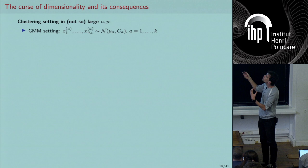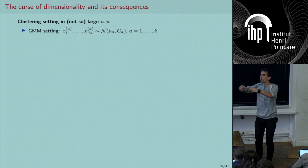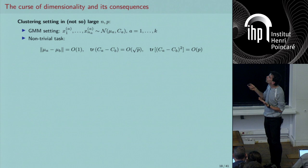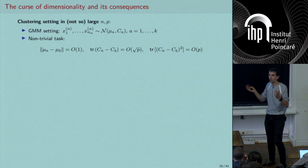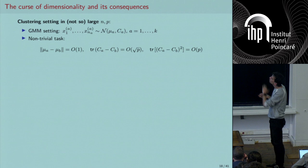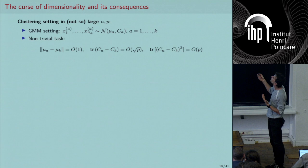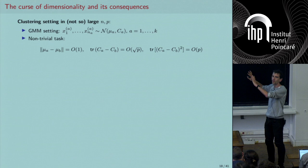I need a non-trivial setting where the distances ‖μ_A − μ_B‖ and trace-based distances between covariances don't become too large or too small as P grows. The non-trivial condition is that these distances are O(1) as P increases. This ensures the problem doesn't become too easy or impossible.